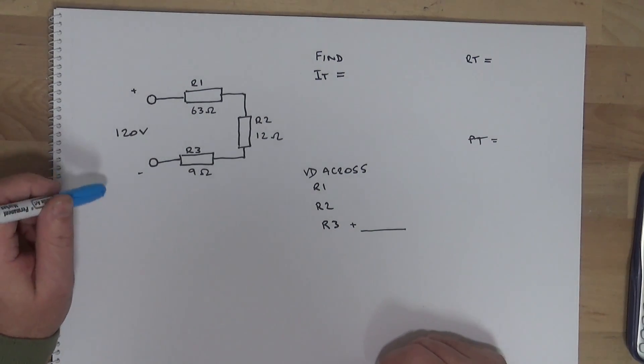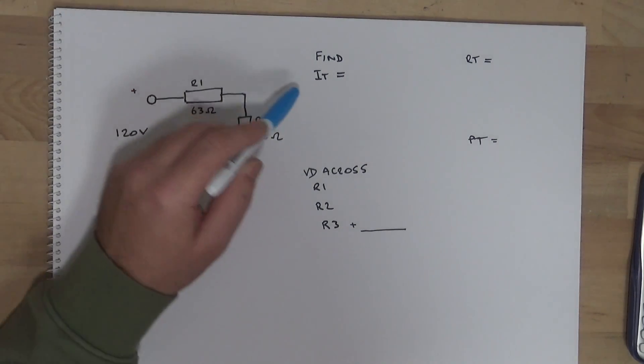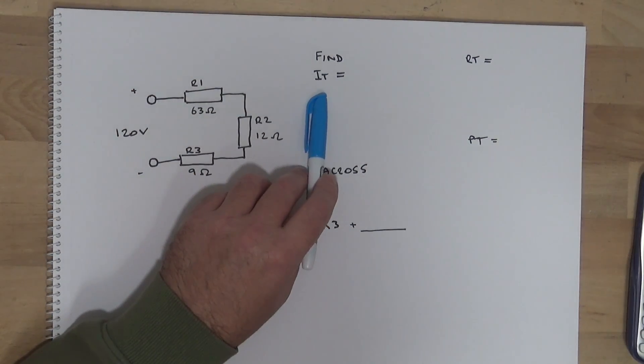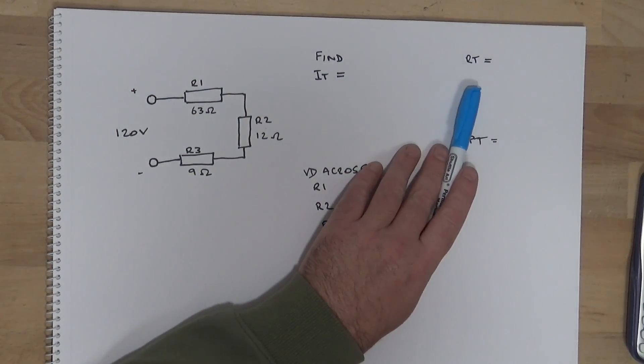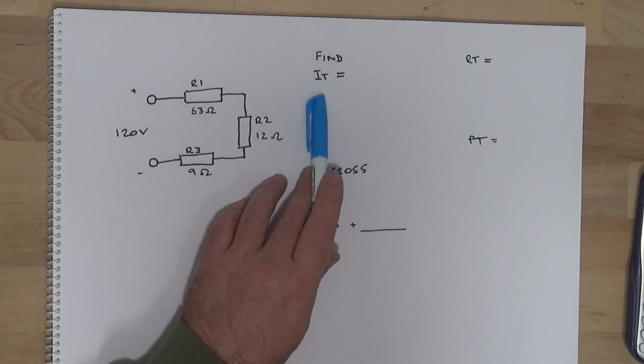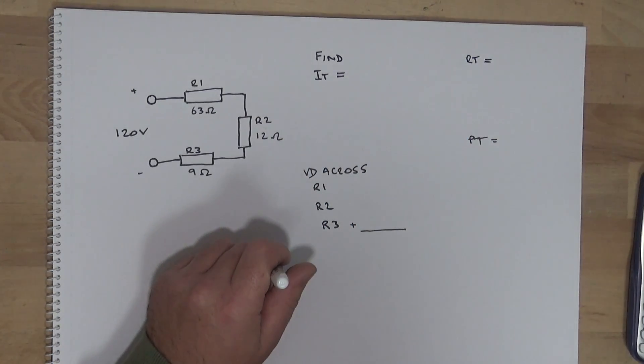First thing you should know is this is a series DC circuit. So we have to want the current total. We need to know the resistance total. Once we have the resistance total, we can work out the current total, the power total and voltage drop across each resistor.